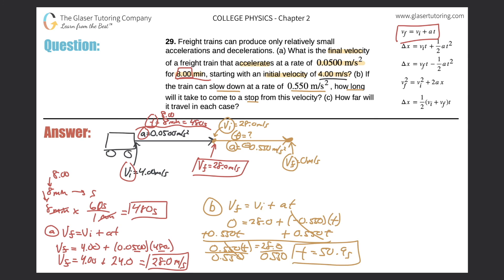So that will be the time it takes. If the train can slow down at the rate of 0.55 meters per second squared, it'll take 50.9 seconds — almost a minute — to come to a stop.